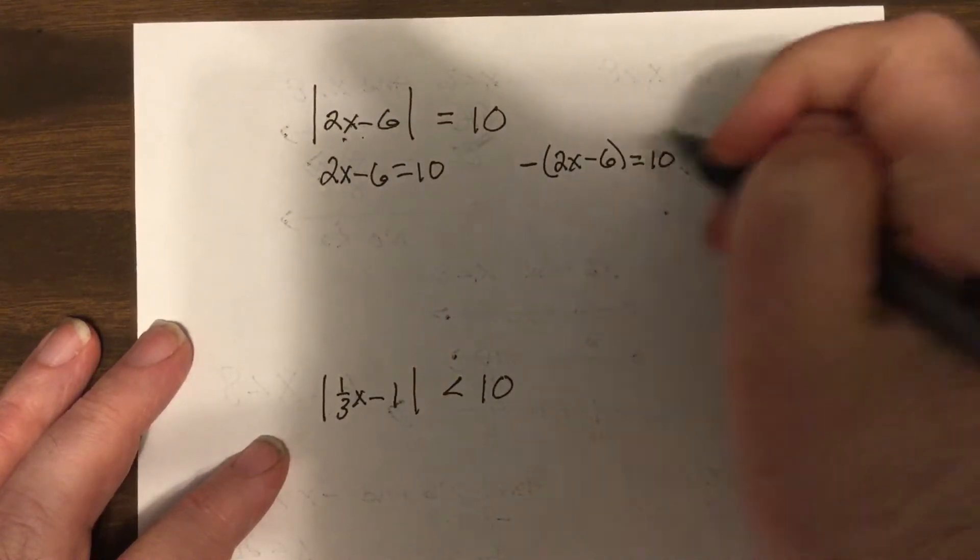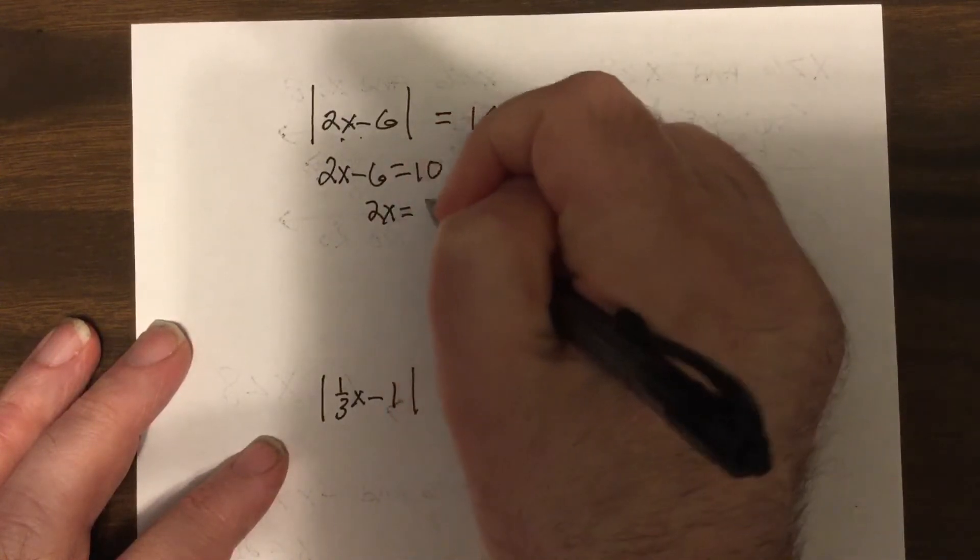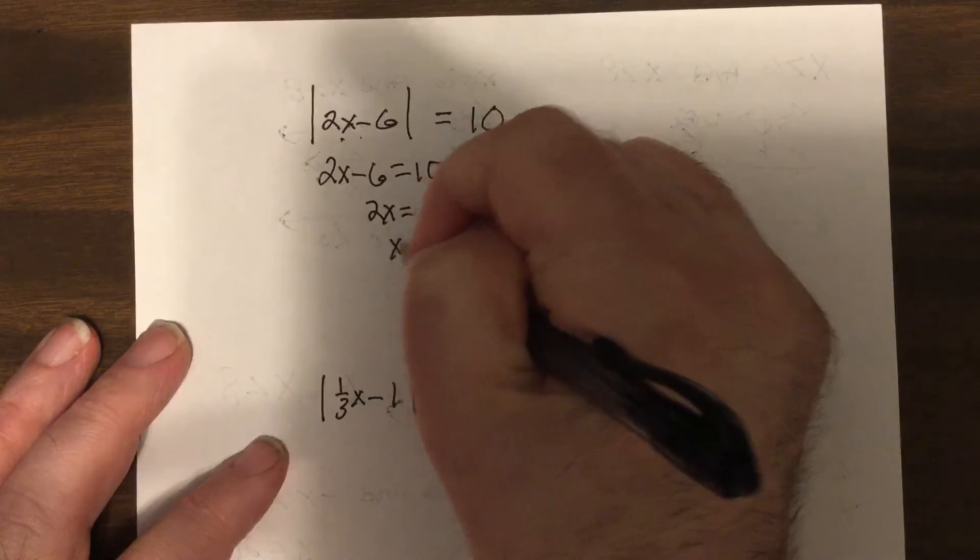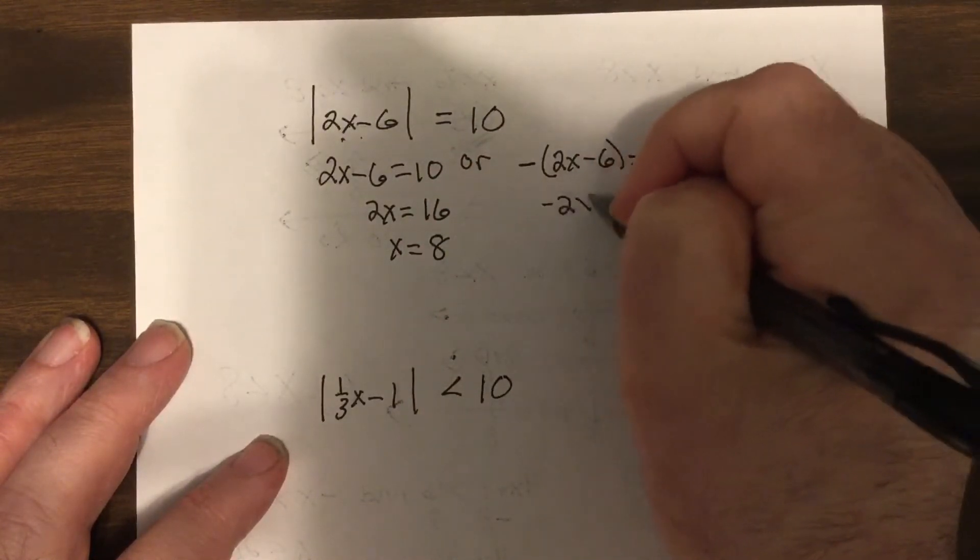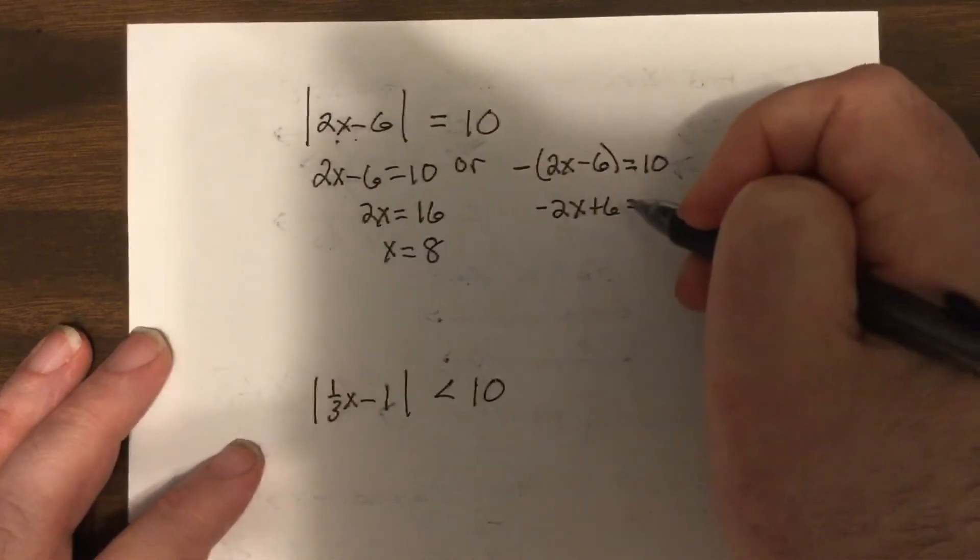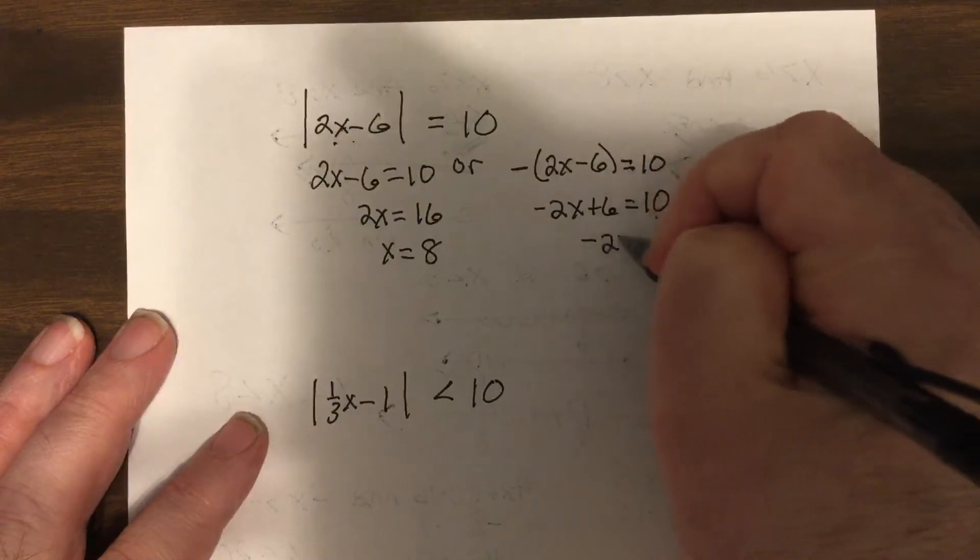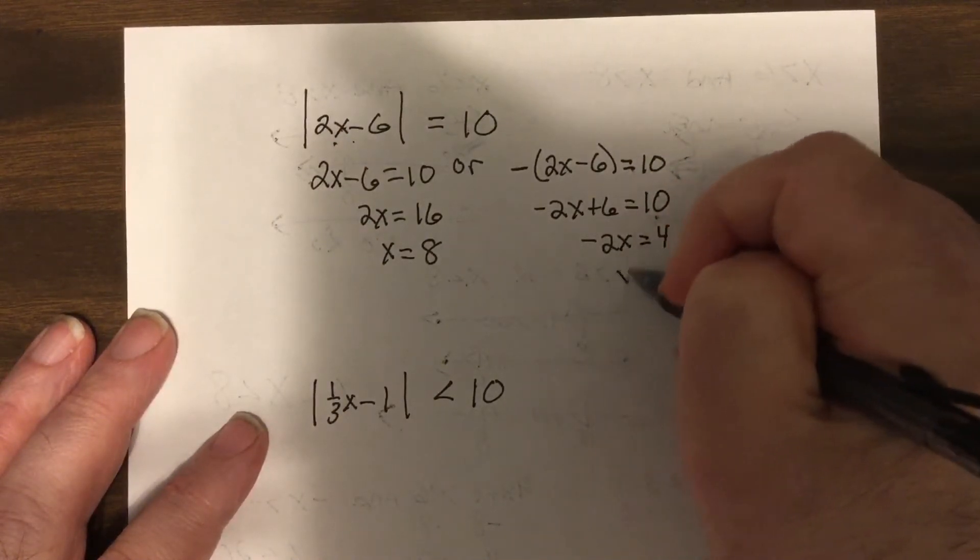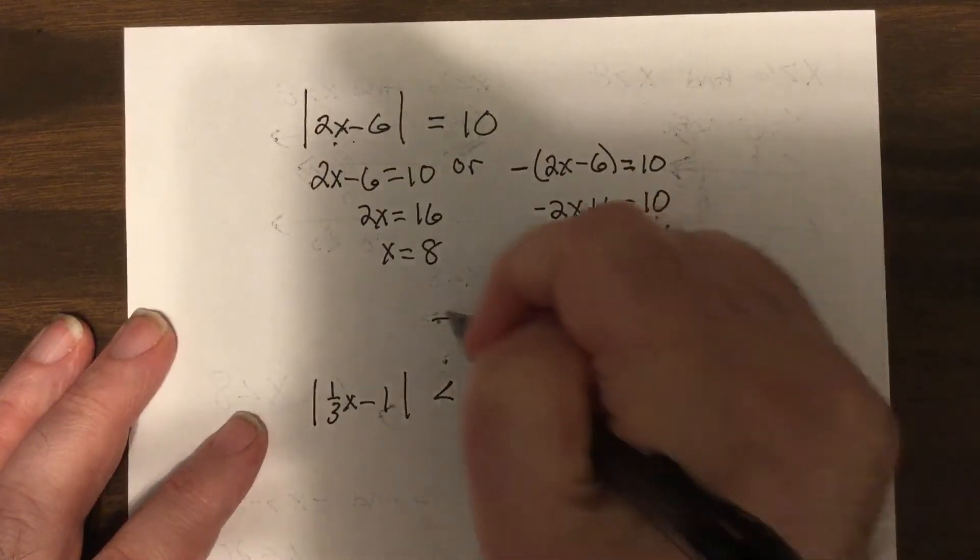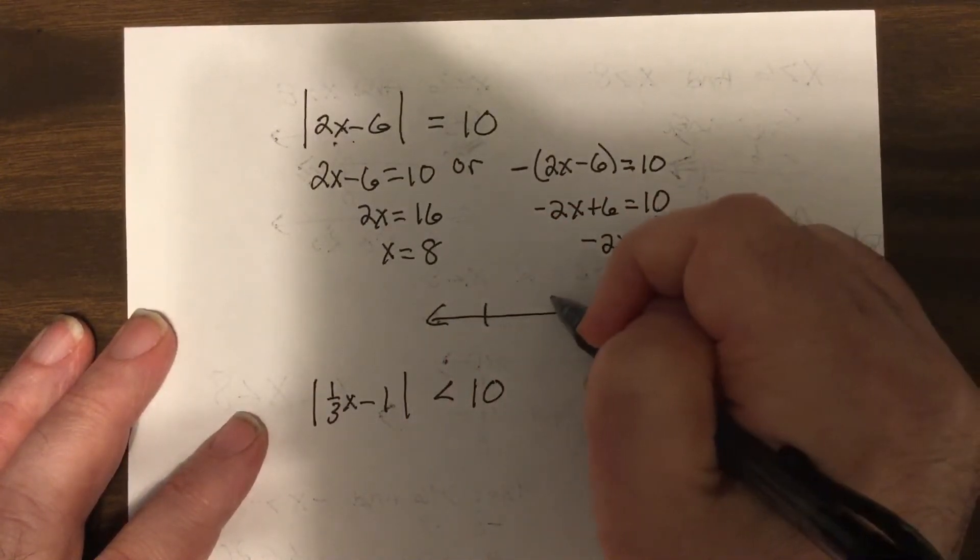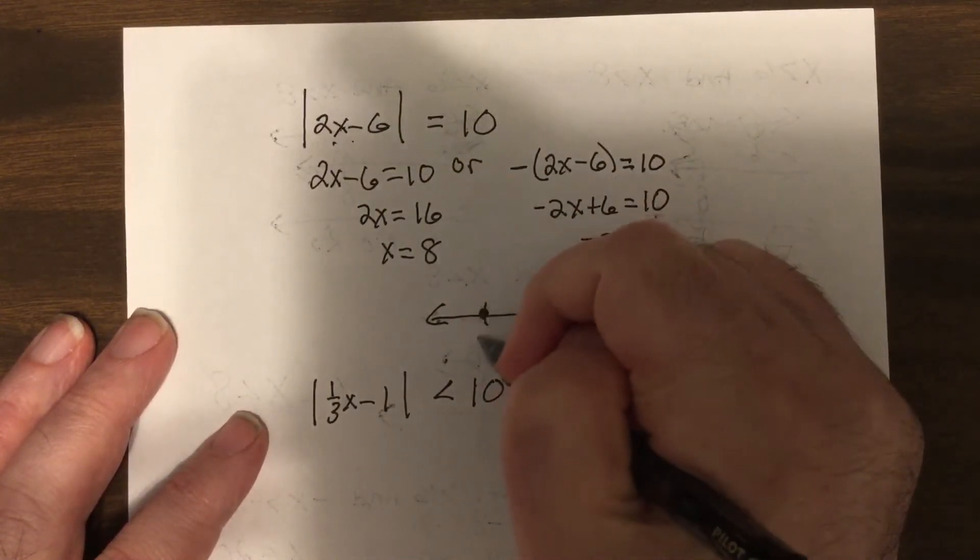Now, equals is always 'or'. So you would add 6, divide by 2. Here you would take the opposite, subtract 6, divide by negative 2. Now when you're dealing with just equals, it's just solid dots at negative 2 and 8.